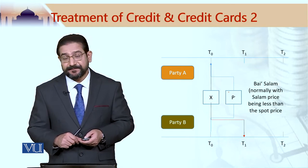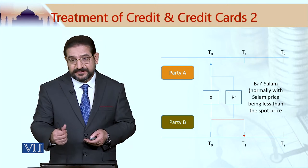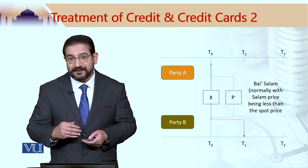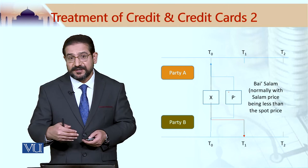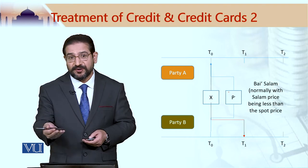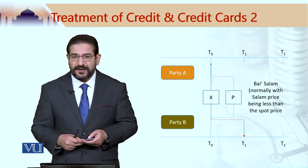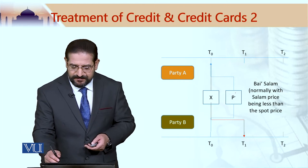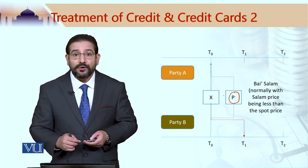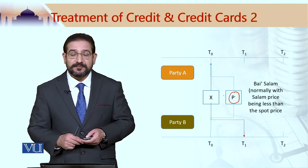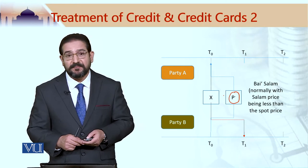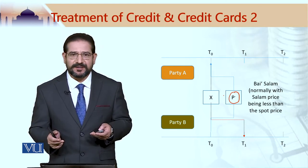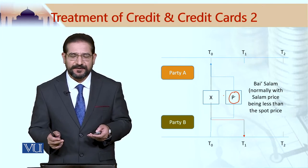In case of bea salam, where the price is paid upfront and the delivery of the commodity takes place on a future date, it is quite acceptable for the seller's price to be lower than the prevailing market price, and this is acceptable as well in an Islamic economic framework.